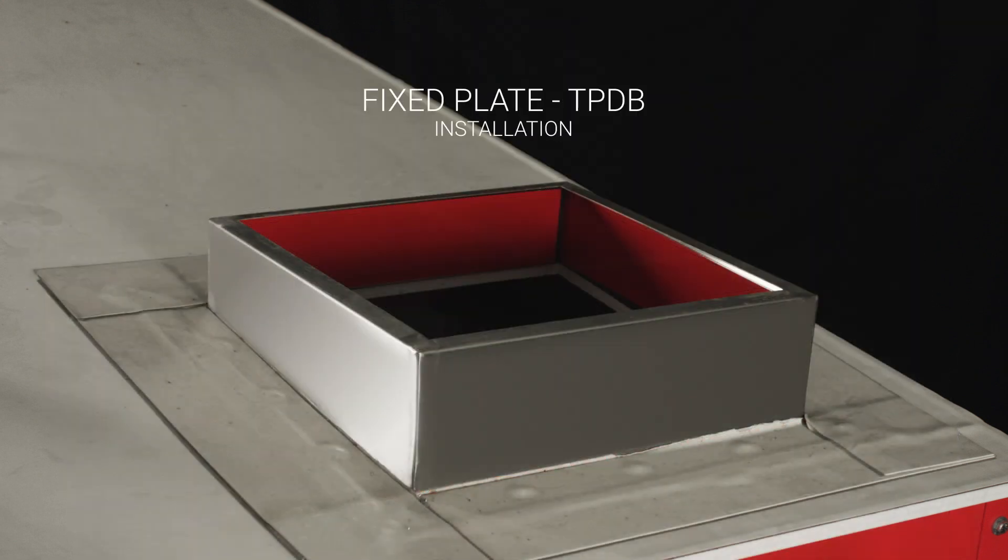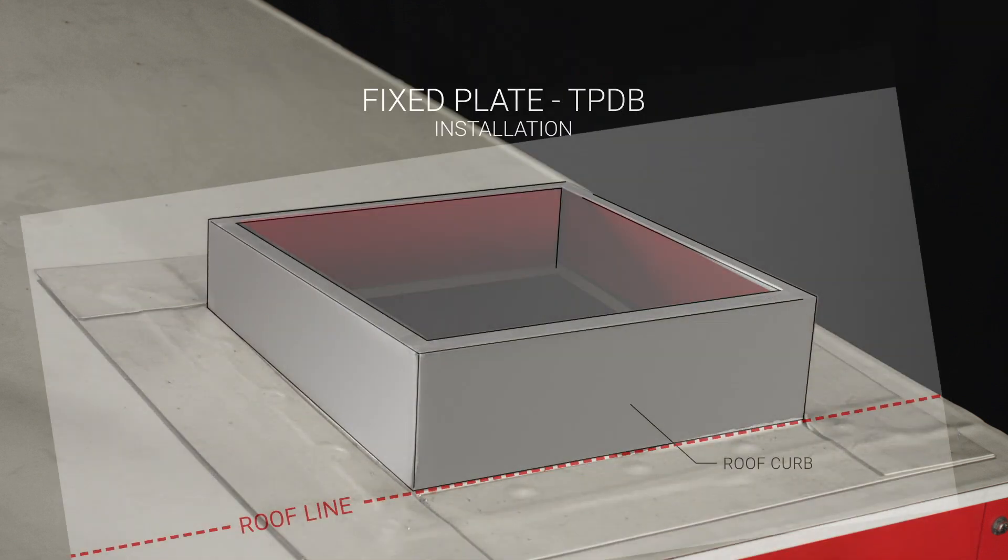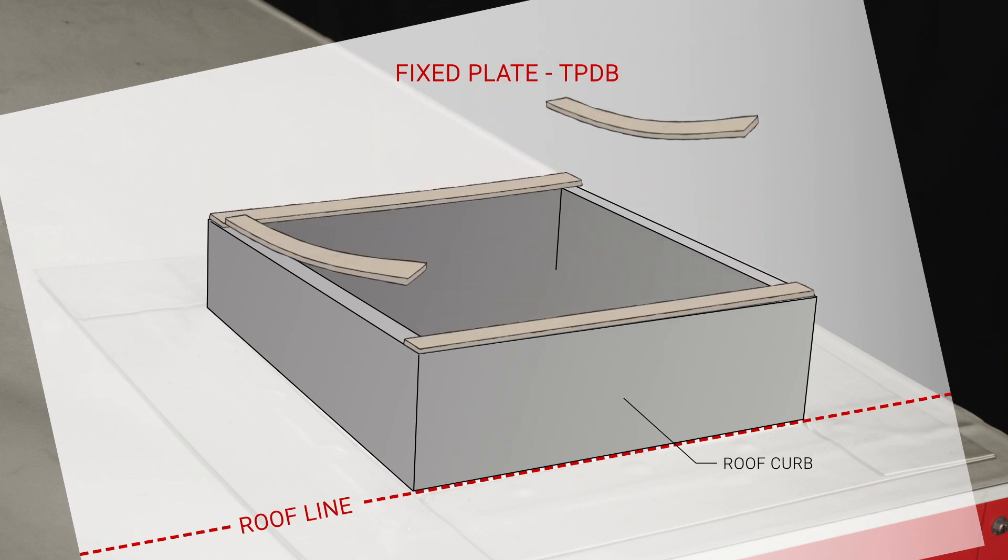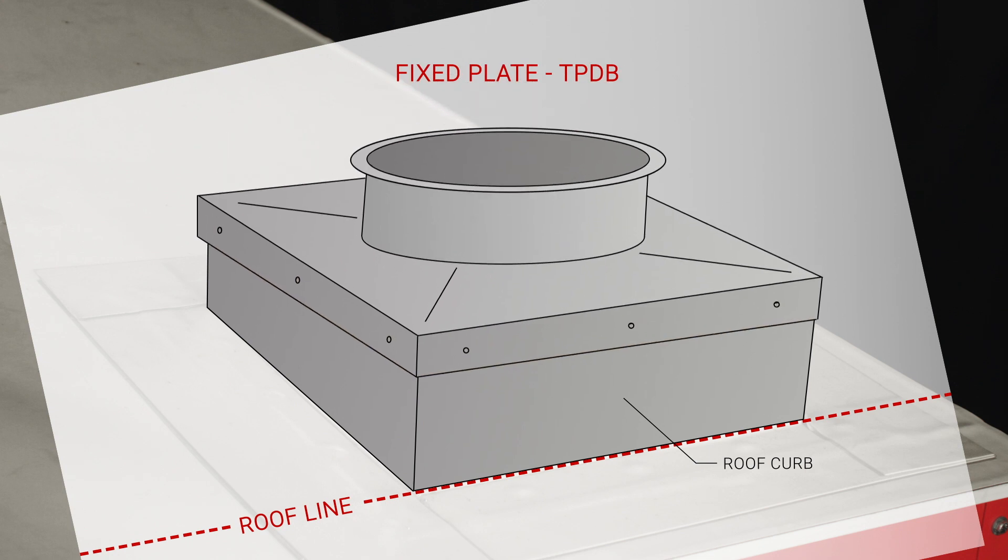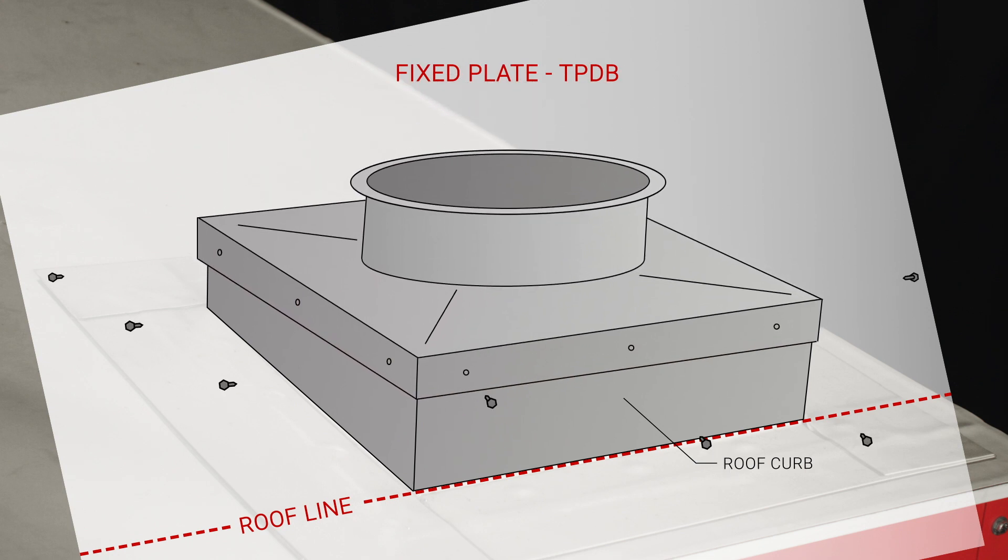To install a fixed TP DB plate, you must first add gasket material to the edges of the top of the curb as shown. Then set the transition plate on the curb. Lastly, secure the plate to the sides of the curb using three self-drilling fasteners per side.